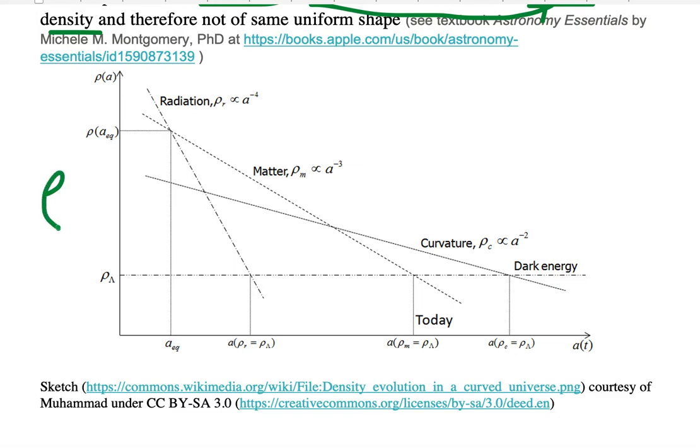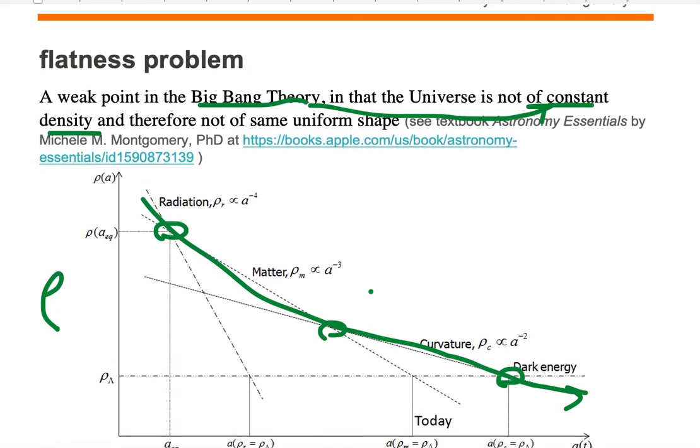However, observations tell us that density changes over time. We've gone from a radiation-dominated universe to a matter-dominated universe to a dark-energy-dominated universe. And density continues to decrease over time.